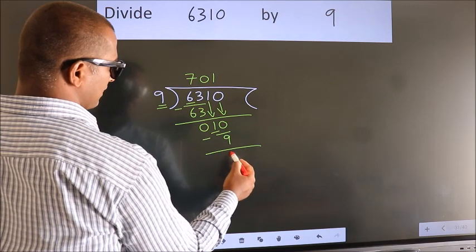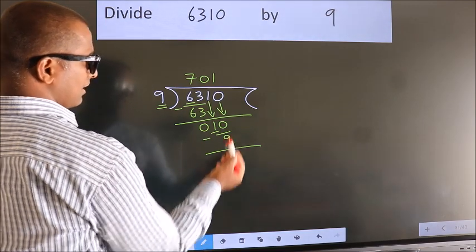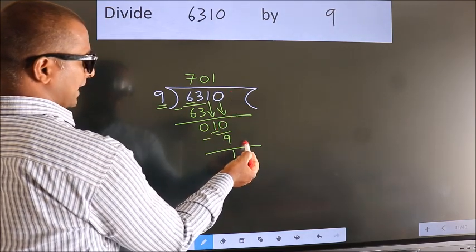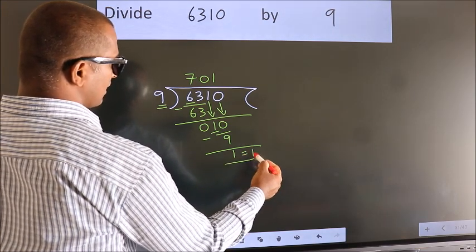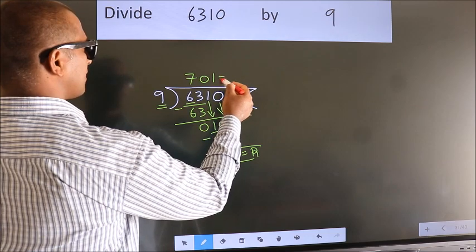Now we subtract. We get 1. No more numbers to bring down, so we stop here. This is our remainder. This is our quotient.